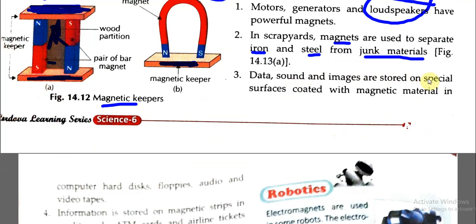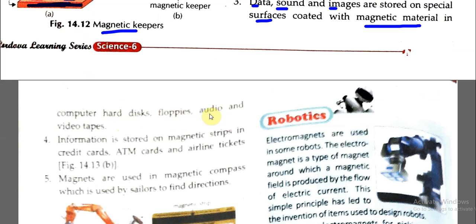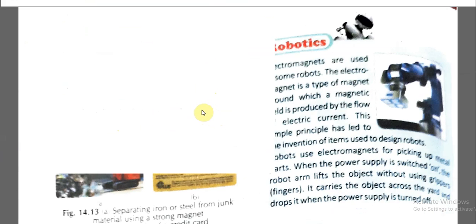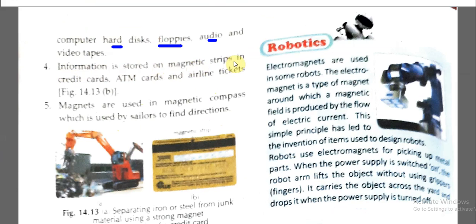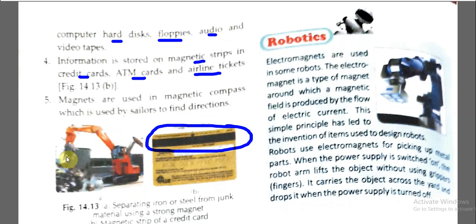Data, sound, and images are stored on special surfaces coated with magnetic material — for example, computer hard disks, floppy disks, audio and video tapes. Information is also stored on magnetic strips in credit cards. You can see the black lining on a credit card or debit card — that is actually a magnetic strip.